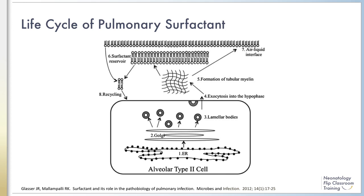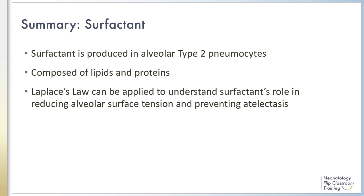In summary, surfactant is a substance produced by type 2 pneumocytes starting around the 6th month of gestation. It is composed of lipids and proteins and acts to improve lung compliance by decreasing alveolar surface tension. This concludes Module 2.